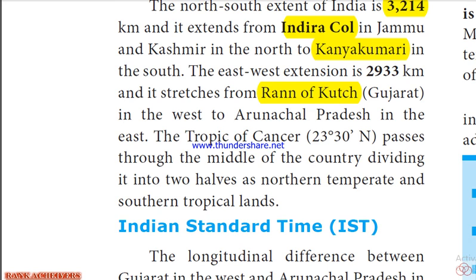The Tropic of Cancer at 23°30' North passes through the middle of the country, dividing it into two halves — the northern temperate region and the southern tropical lands. Because of this, there are two different geographical features in India.